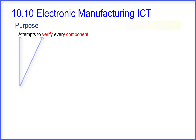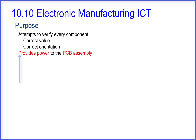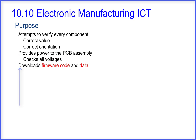What is the purpose of an ICT? An ICT attempts to verify every component to verify it has the correct value and the correct orientation. The ICT also can provide power to the PCB, which allows a check for all voltages. The ICT can also download firmware code and data to micros and flash.